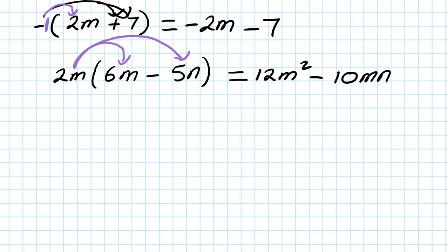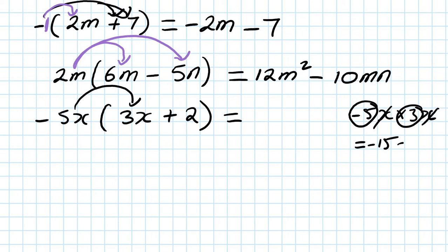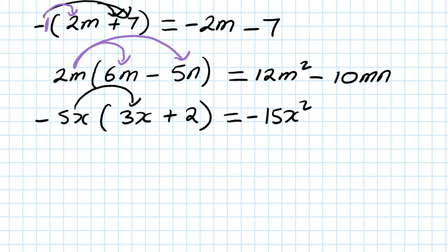Let's do one more. Let's say negative 5x, open bracket, 3x plus 2. So negative 5x times 3x: negative 5 times 3 is negative 15, and x times x is x squared. So your answer is minus 15x squared. And then minus 5x times 2: minus 5 times 2 is minus 10, so it's minus 10x.